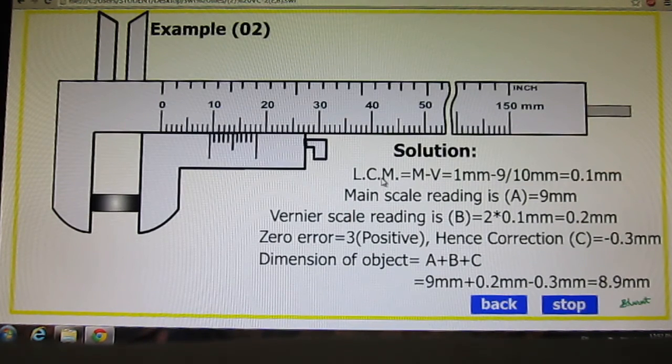First we calculate least count measurement, which is 0.1mm. Main scale reading A is 9mm. Here it is, 9mm.